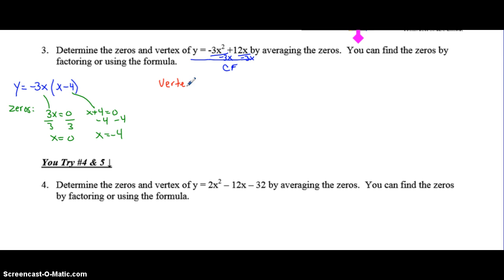So, now to find the vertex. For the x-coordinate, we are going to average the two zeros. And for the y-coordinate, you are going to take the x-coordinate of the vertex and substitute it into either this equation or this equation. It doesn't matter because they are the same equations. And solve for y. So, that makes the vertex at negative 2, negative 36.